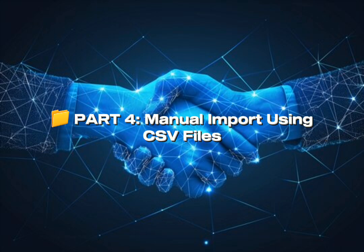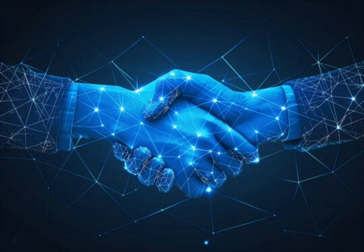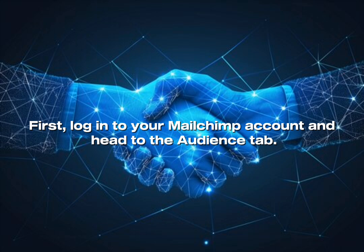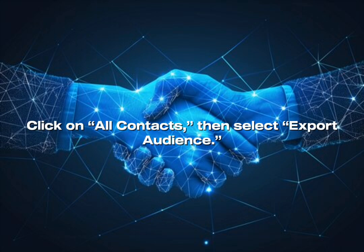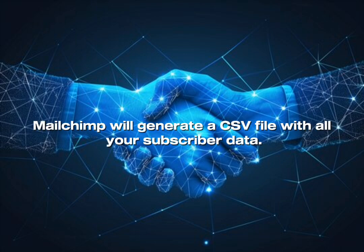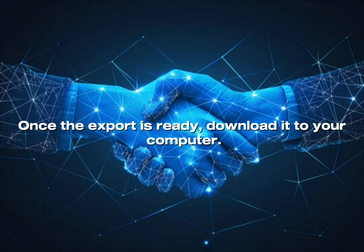Part 4: Manual Import Using CSV Files. If you're not using Zapier or just want to do a one-time import, the manual method is quick and effective. First, log in to your Mailchimp account and head to the Audience tab. Click on All Contacts, then select Export Audience. Mailchimp will generate a CSV file with all your subscriber data. Once the export is ready, download it to your computer.